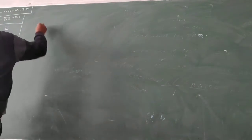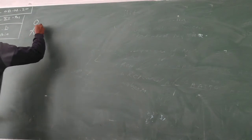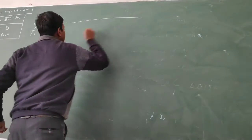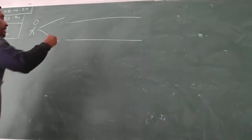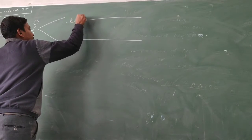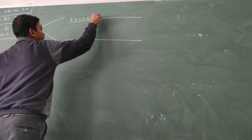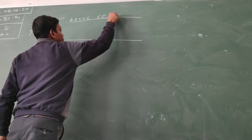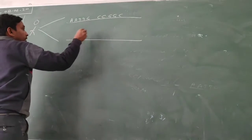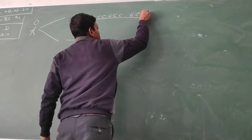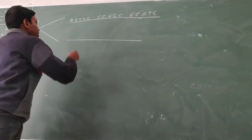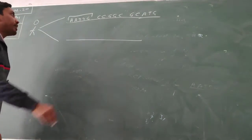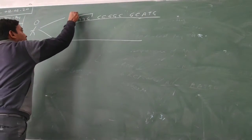Suppose the same person has two different strands of DNA obtained during DNA fingerprinting. The first strand consists of: adenine, adenine, thymine, thymine, guanine, cytosine, cytosine, guanine, guanine, cytosine, guanine, cytosine, adenine, thymine, guanine. The adenine, adenine, thymine, thymine, and guanine sequence repeats 35 times.